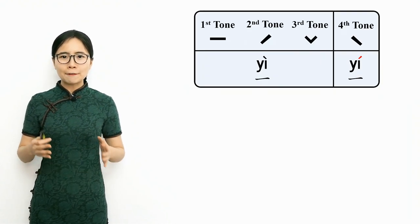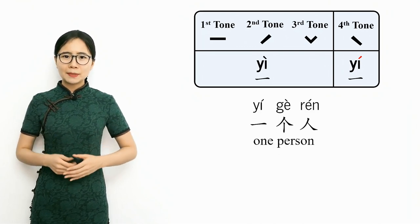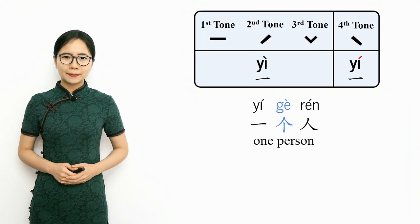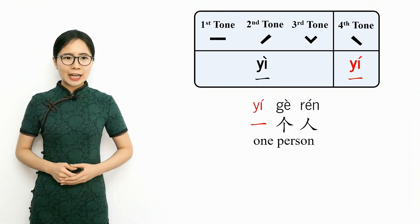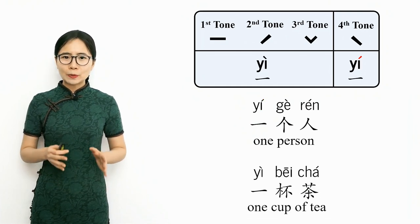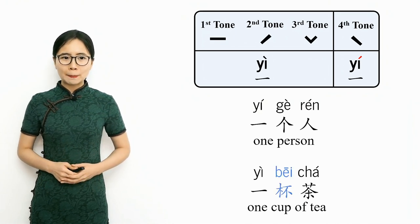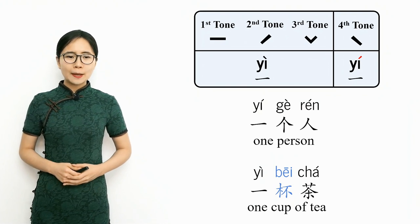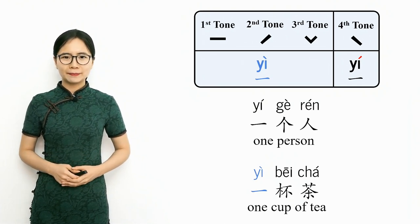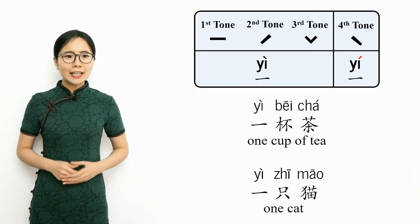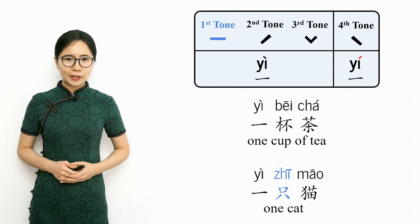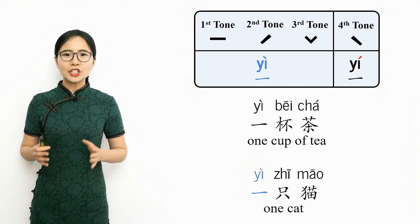Let's look at examples of Yi followed by a measure word. Yi ge ren means one person — Yi is followed by the measure word ge, which uses the fourth tone, so Yi changes to the second tone, the rising tone: Yi ge ren, one person. Yi bei cha means one cup of tea — Yi is followed by bei, which uses the first tone, so Yi is pronounced with the falling fourth tone: Yi bei cha, one cup of tea. Yi zhi mao means one cat — Yi is followed by the measure word zhi, which uses the first tone, so Yi is pronounced with the falling tone: Yi zhi mao, one cat.